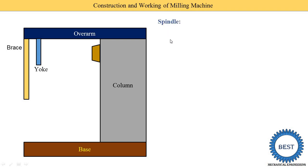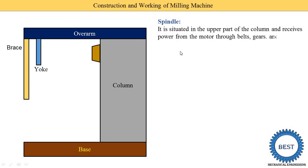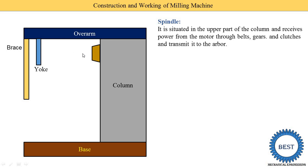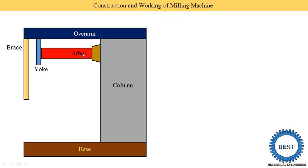The spindle is situated in the upper part of the column and receives power from the motor through belts, gears, and clutches, and transmits it to the arbour. The spindle is mounted on the top part of the column and connected to the electric motor — it is a rotating component. Power is transferred from the motor to the spindle via belt, gear, or clutch, and then transmitted to the arbour.